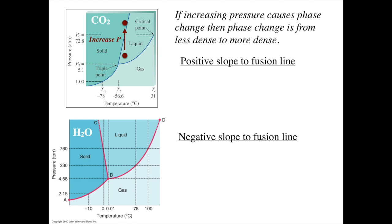So carbon dioxide, which is typical of most substances, has a positive slope to its fusion line. If you increase the pressure, you could potentially cross the fusion line and pass from liquid to solid. And that tells us that the solid has a greater density than liquid. If you had liquid CO2 and solid CO2 both present, the solid CO2 would be at the bottom of the liquid because it's more dense.